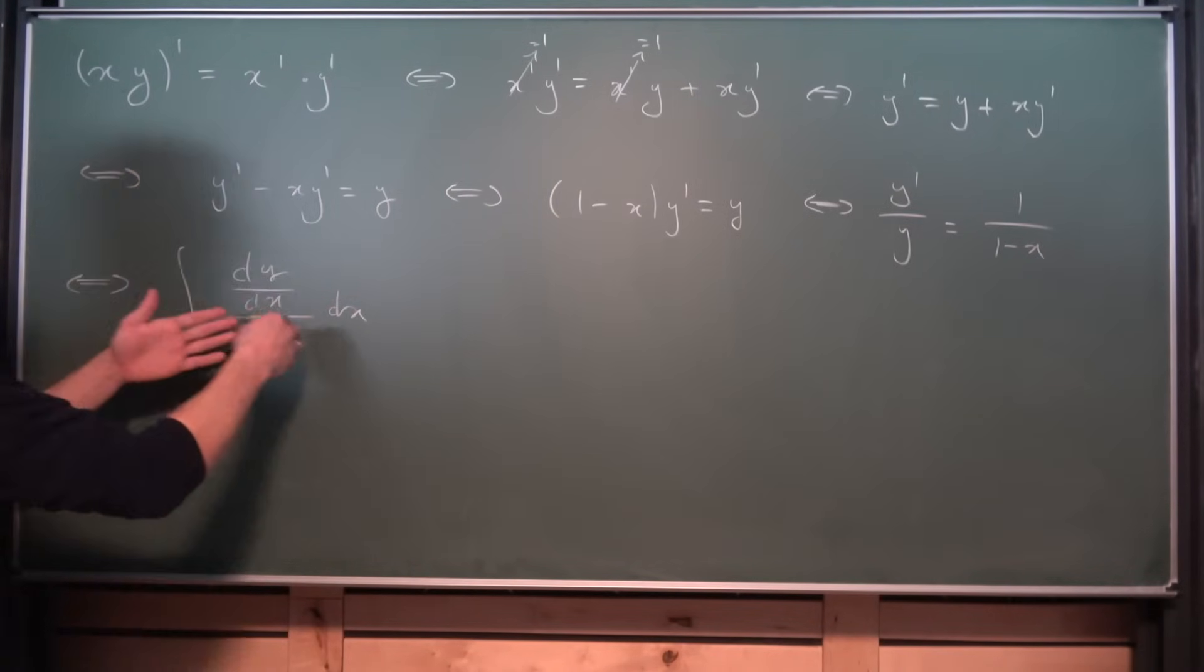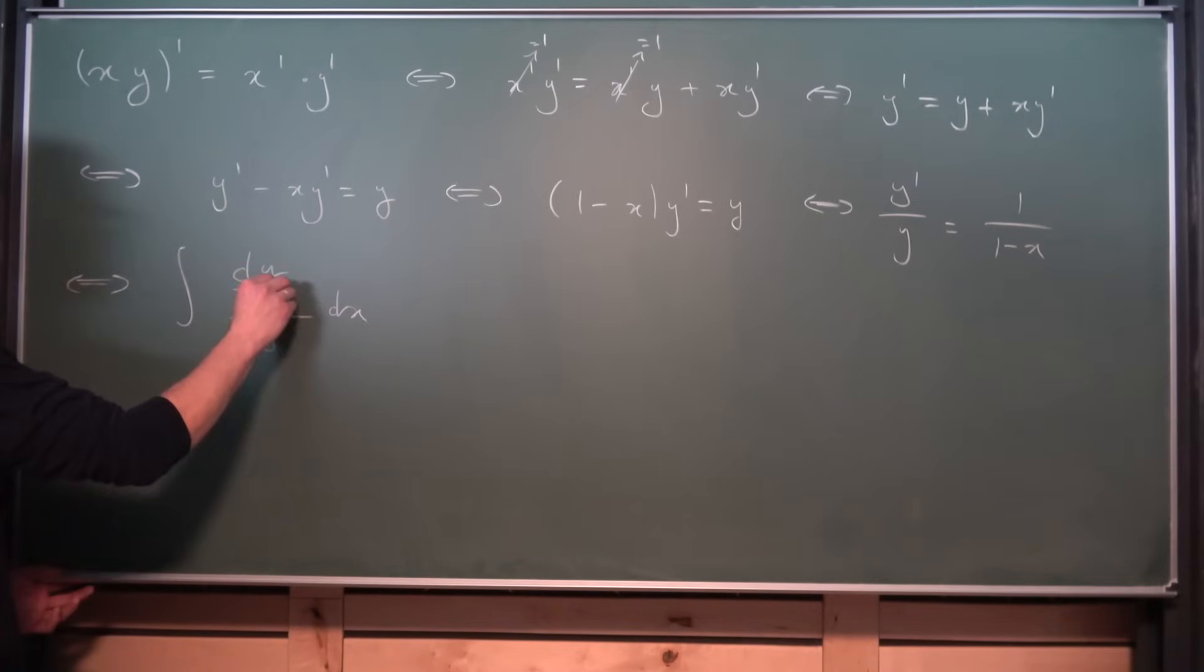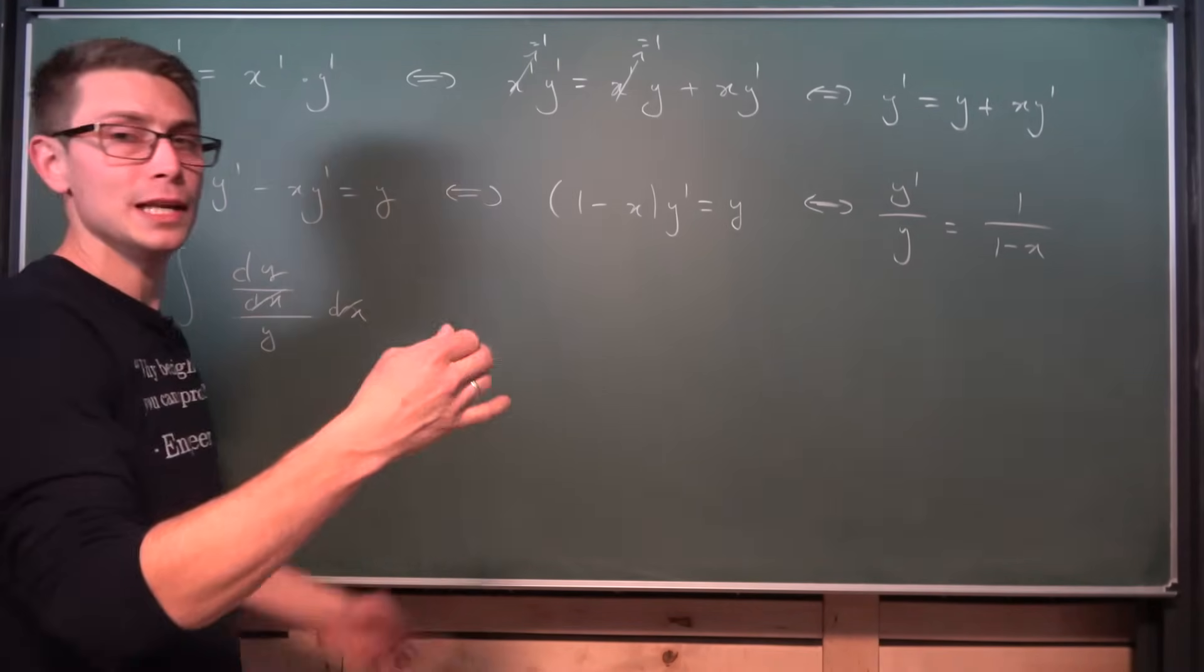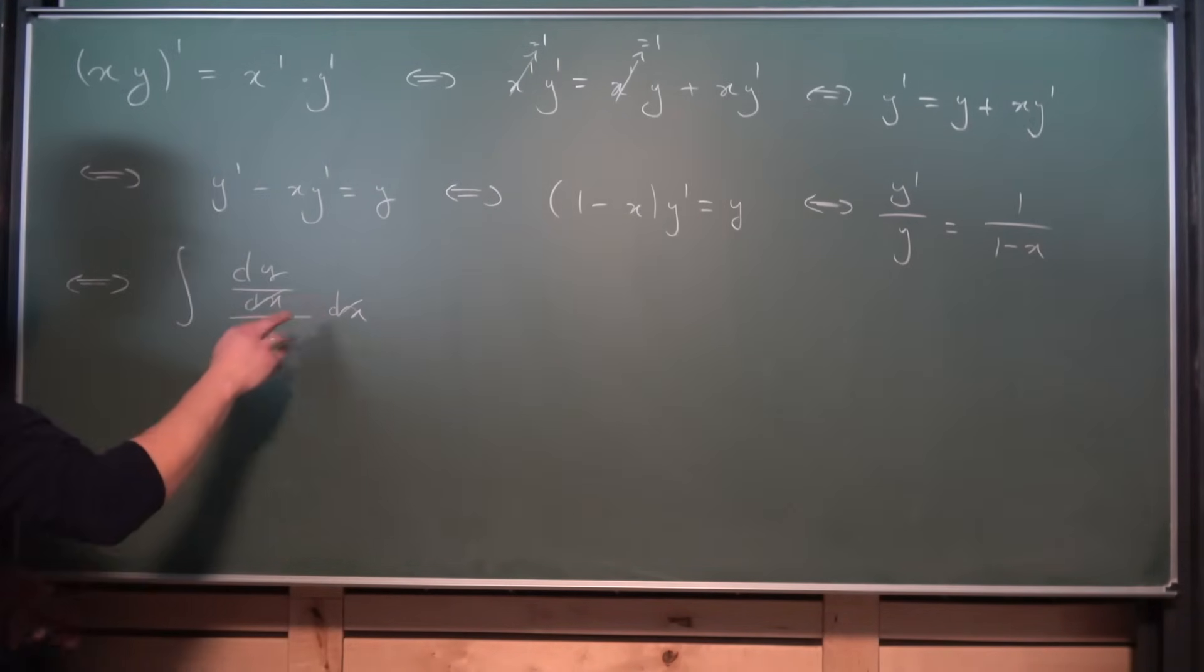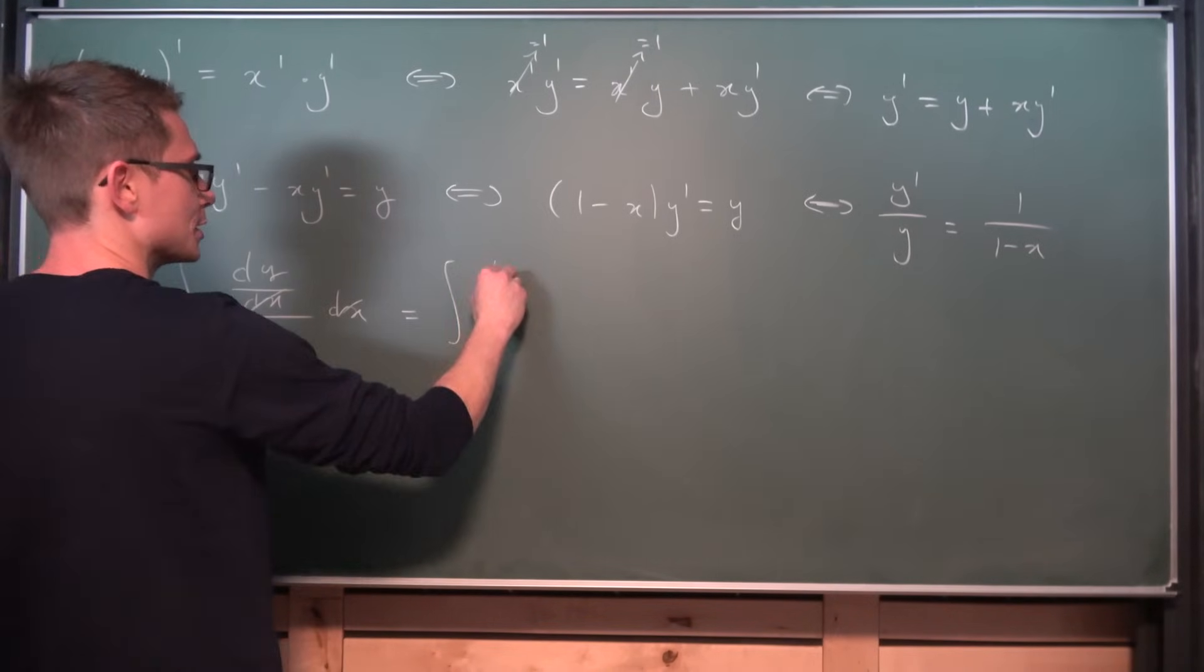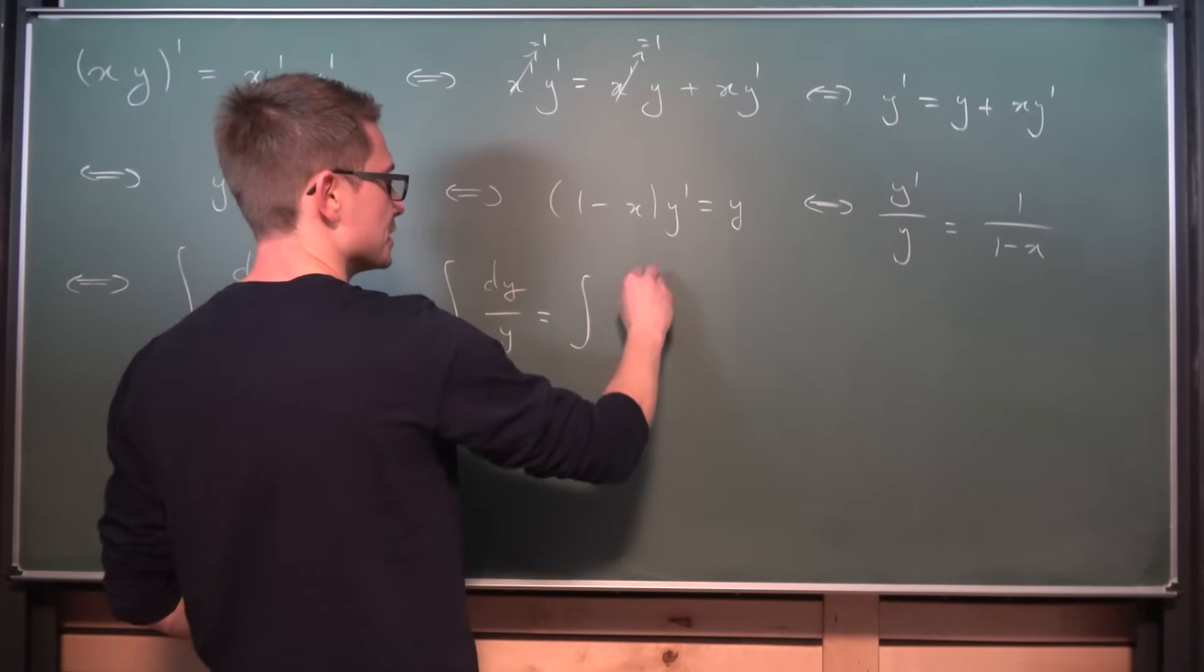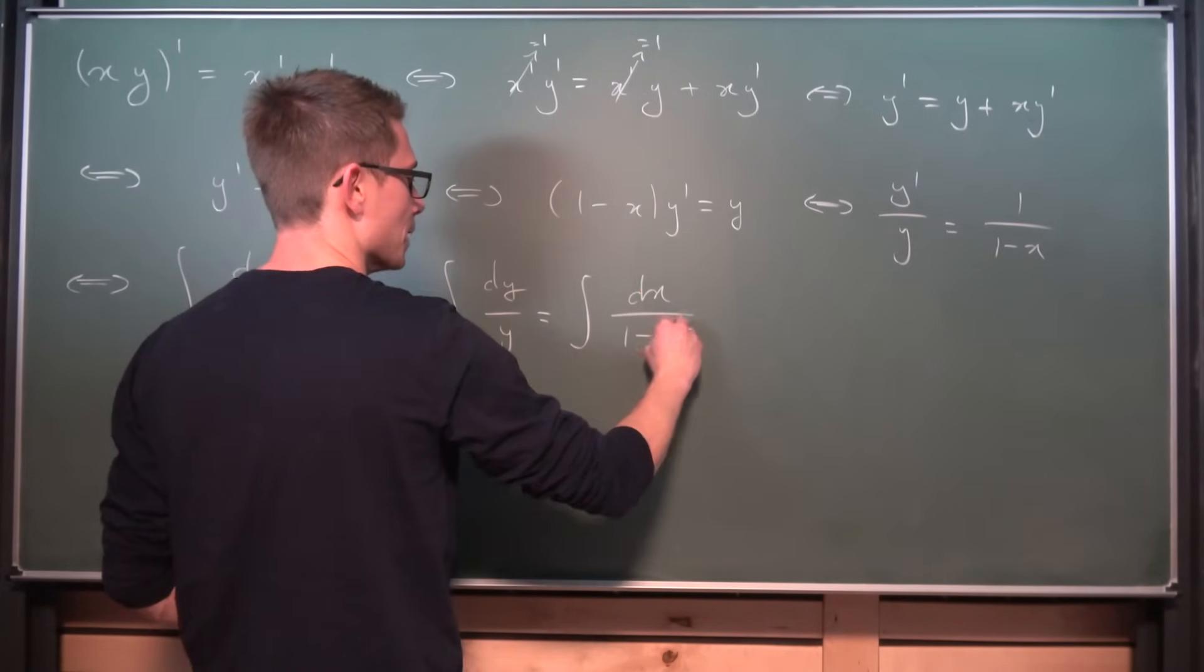You can just introduce a proper substitution. Let y equal to a new variable and everything is going to cancel out nicely. So overall, this integral turns into dy divided by y is equal to the integral of dx over 1 minus x.